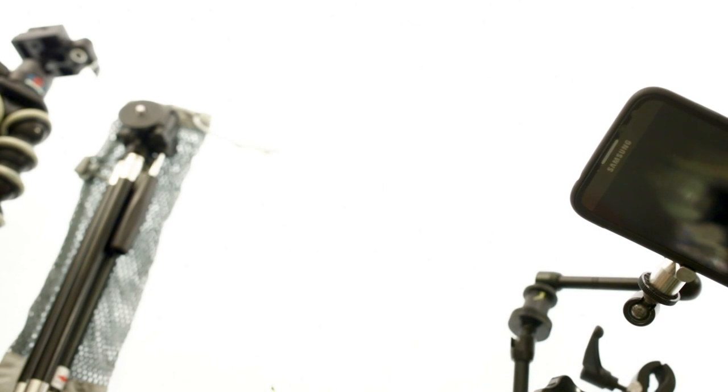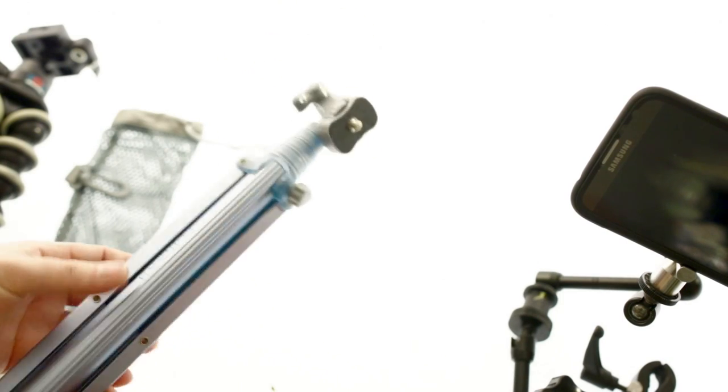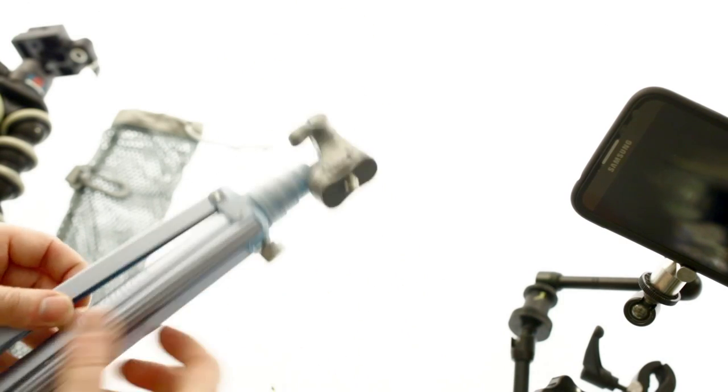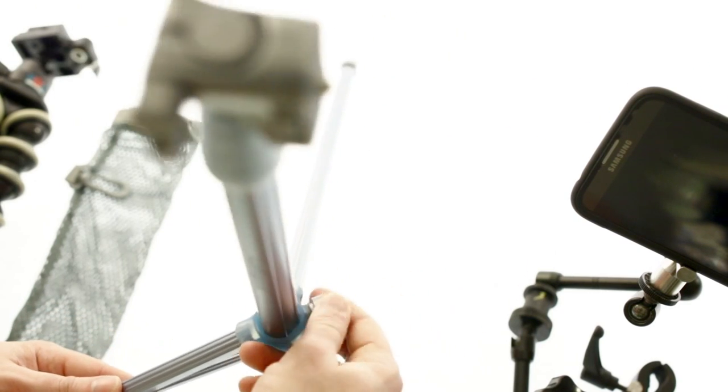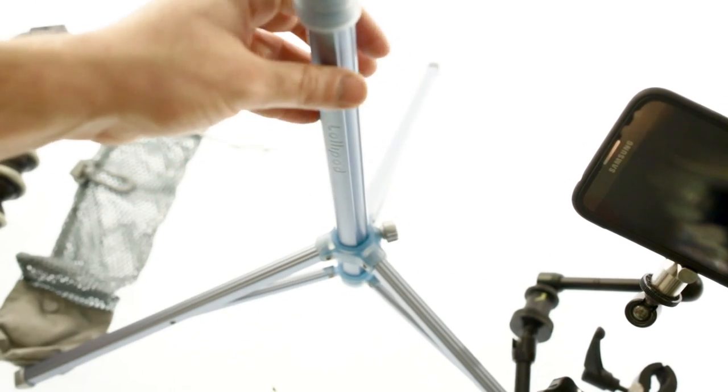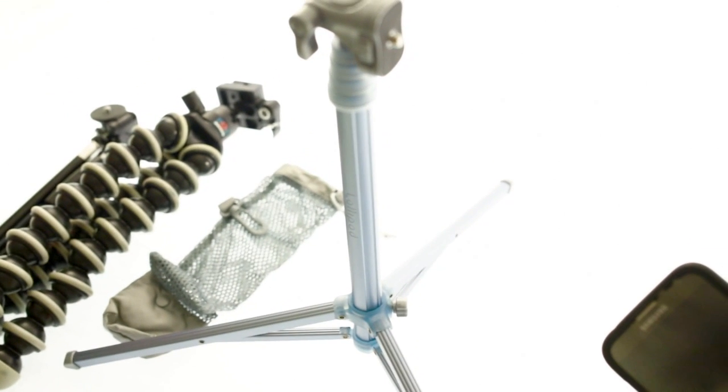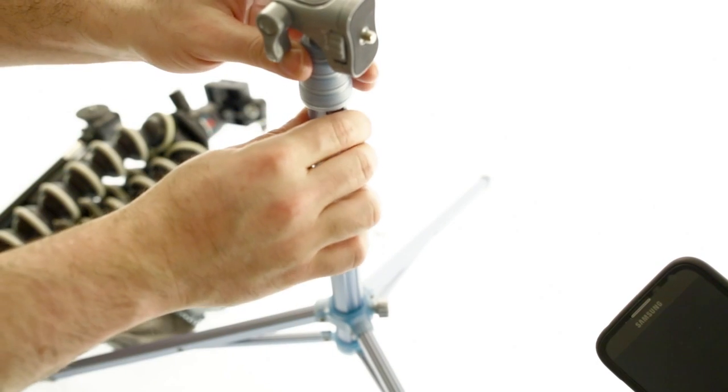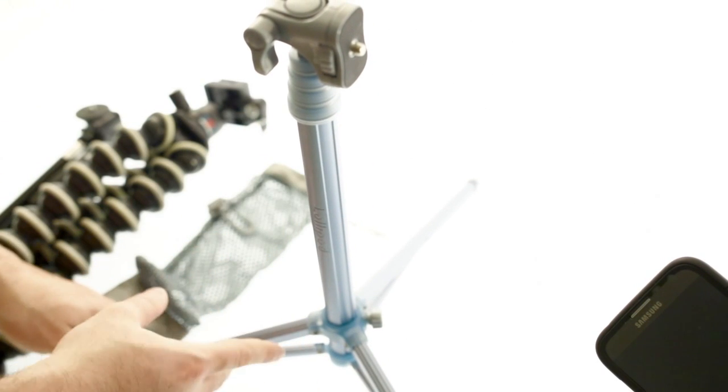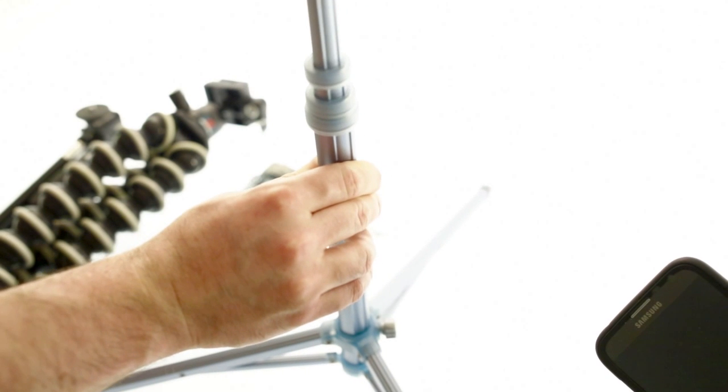So the Lollipod, I recently got this. And my main intention for this was to use it as a light stand. But it's mainly intended, I think, for use as a tripod. So let me move this back. Okay, so this is the Lollipod. For its very, very tiny size and weight, when it's folded, it's something that goes up really, really high.